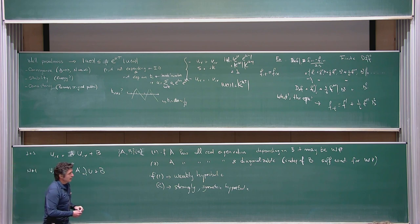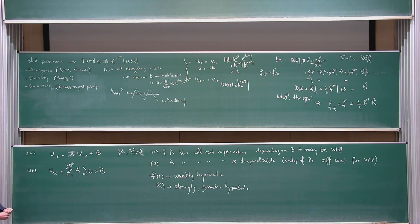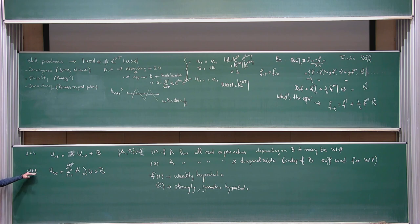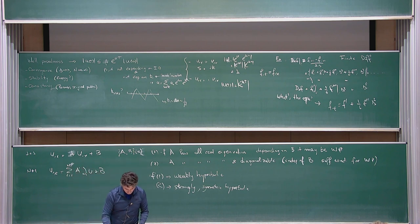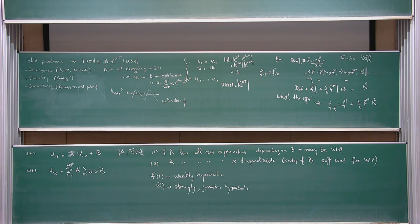...if you have a structure in all dimensions, and the transformation that diagonalizes each individual matrix is independent of the direction, then it's symmetric hyperbolic. If you have a different transformation per direction but all Jordan forms are diagonal regardless of direction, it's strongly hyperbolic. Either way you're in the best possible scenario. A lot of the work going on in implementations in general relativity from the late 1990s was focused on this.